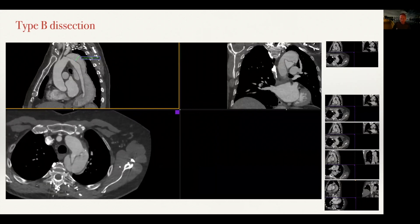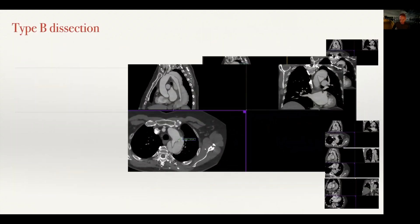Firstly, you can see the false lumen measures up to 2.5 centimeters — a false lumen bigger than two centimeters is a poor prognosticator. Next is the fenestration size: a fenestration bigger than one centimeter is a problem. This patient has a fenestration of 1.6 centimeters, which is a poor prognosticator. So now we have two negative prognosticators — a big false lumen and a big fenestration.